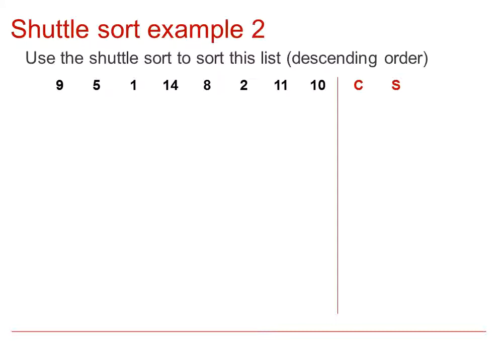Let's look at this second example. Here, we would start by comparing the 5 with the 9. We don't want to swap this, because it's already in descending order, which is what this is asked for. The list would not change.